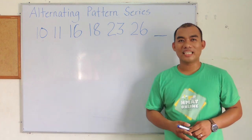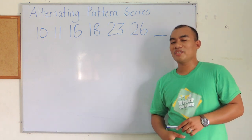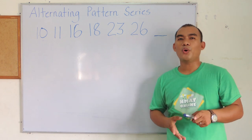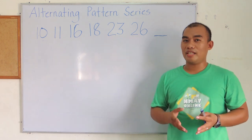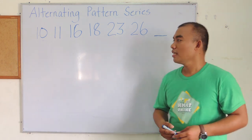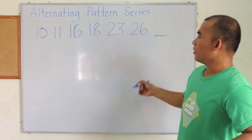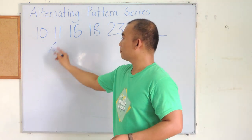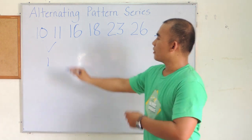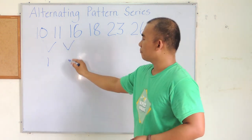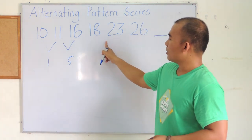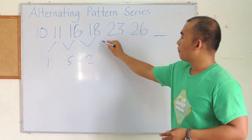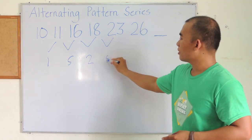The next type of series is called an alternating pattern series. It is composed of the terms of two or more distinct series arranged in alternate order. For example, from 10 to 11 the difference is 1; 11 to 16 the difference is 5; 16 to 18 the difference is 2; and 18 to 23 has a difference of 5.